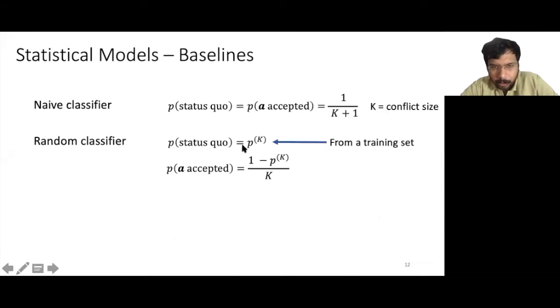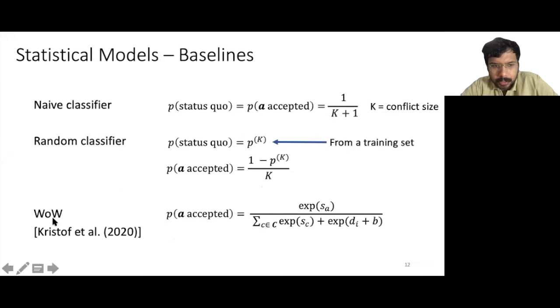We also consider a stronger random baseline called the random classifier. It first learns the probability for the status quo to be accepted for each given conflict size k from the training set, and then it divides the leftover probability uniformly among all the conflicting edits.